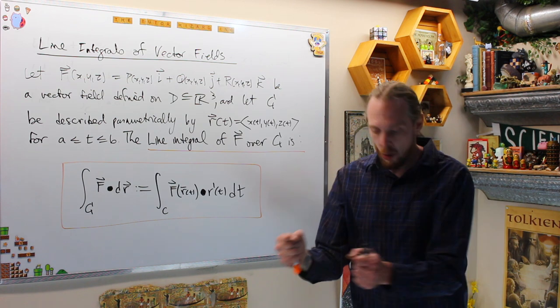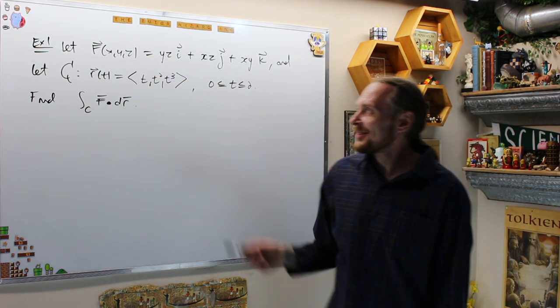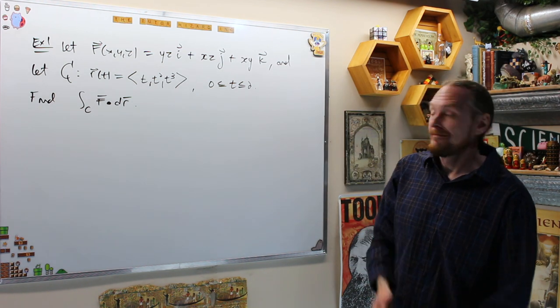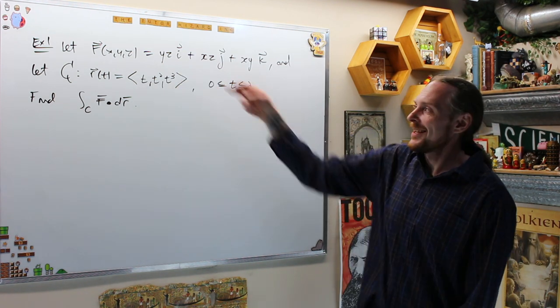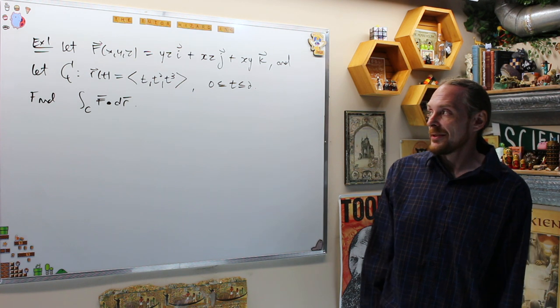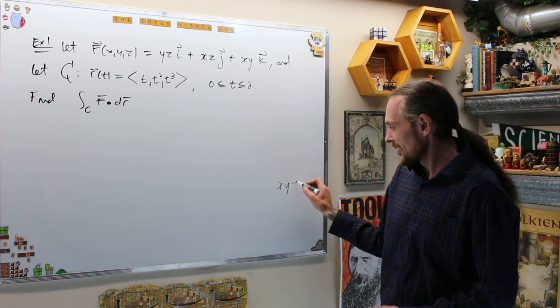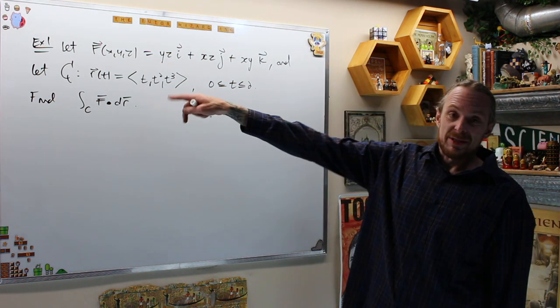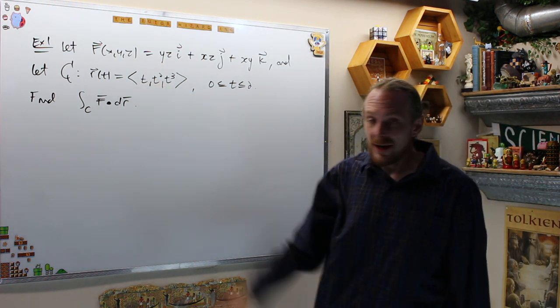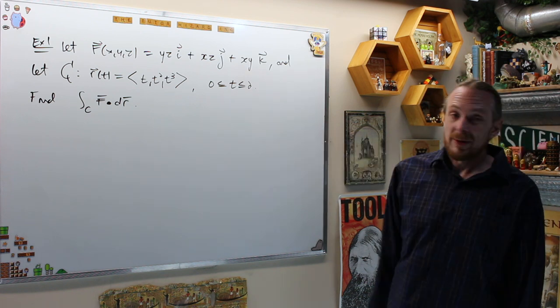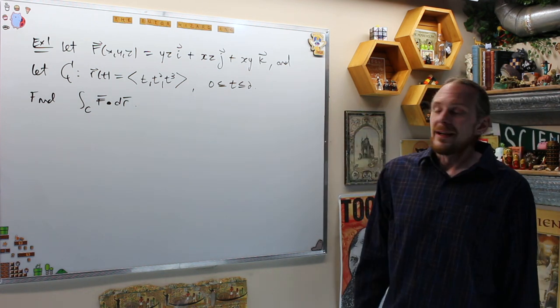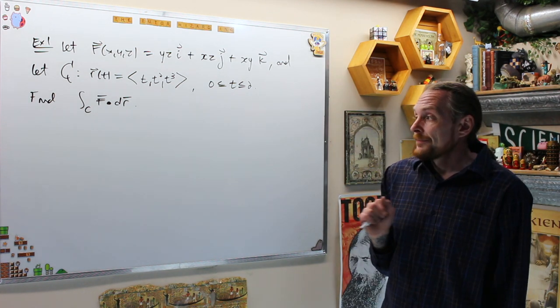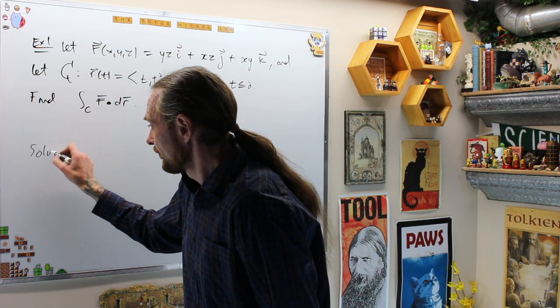Let's do an example. All right, we have a vector field YZI plus XZJ plus XYK. They get it by taking out the coordinate that you're in, essentially. You start with XYZ and just remove the one that you're in. You'll see this is quite nice. Either way, which is parameterized by this position vector R of T from the parameter 0 to 2. They want us to find the line integral of this vector field over this curve C. How do we do that?